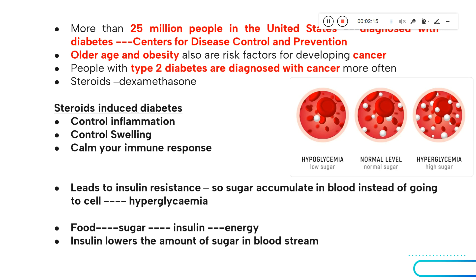Hyperglycemia occurs because whatever food you eat is broken down in your body as sugars, and we have insulin in our body which helps cells take up that sugar. Cells uptake this sugar through the action of insulin — insulin is the mediator which does this work so that sugar can be converted into energy. Both low and high sugar levels lead to complications.